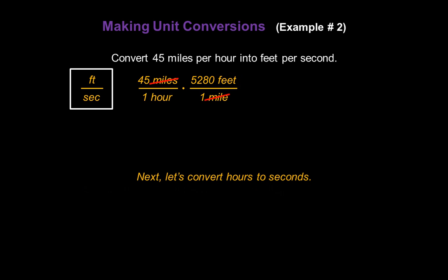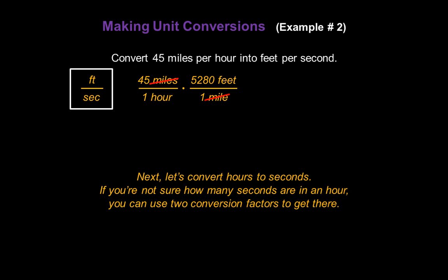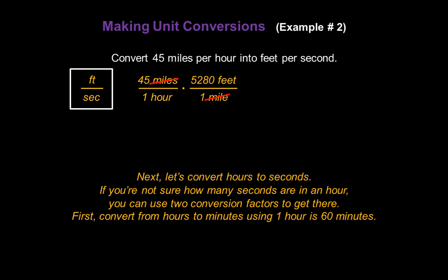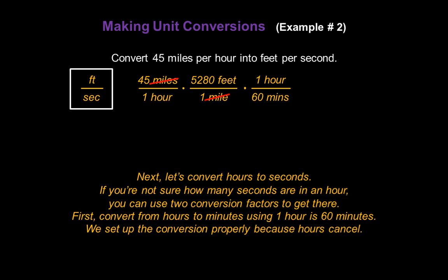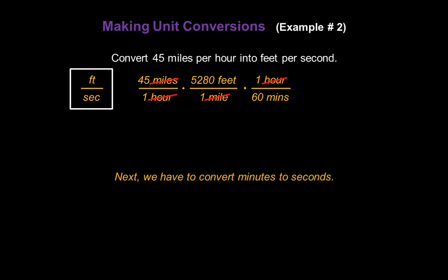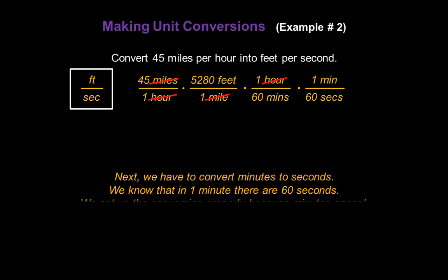Next, let's convert hours to seconds. If you're not sure how many seconds are in an hour, we can use two conversion factors to get there. First, convert from hours to minutes because we know that one hour is 60 minutes. We set up the conversion properly because hours cancel. Next, we have to convert the minutes to seconds. We know that in one minute there are 60 seconds, so let's multiply by one minute over 60 seconds. We know we set up the conversion properly because minutes will cancel in the numerators and denominators.